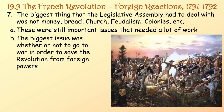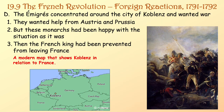The biggest thing the Legislative Assembly had to deal with was whether or not to go to war in order to save the revolution from foreign powers. The émigrés concentrated around the city of Koblenz and wanted war — they wanted help from Austria and Prussia. We've got a modern map here that shows Koblenz in relation to France, and you can see it's not far from the French border.